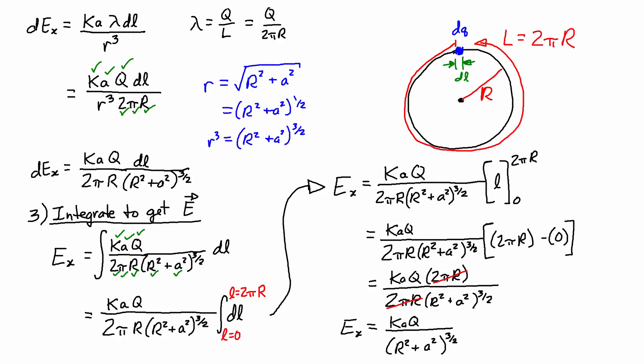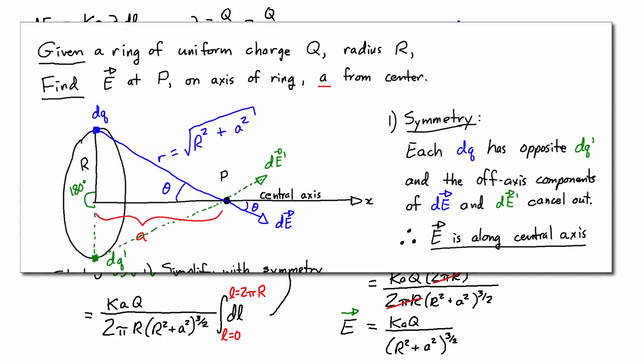And because the electric field at that point, P, doesn't have any components that are off axis, then this is actually the entire electric field. And since the electric field is a vector, and physics teachers tend to be picky about stuff like that, and also since my diagram had the central axis going along i, along the x-axis, I can actually just insert the unit vector i hat there, and then this expression is complete.